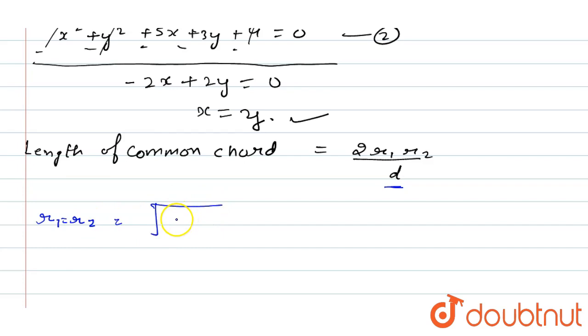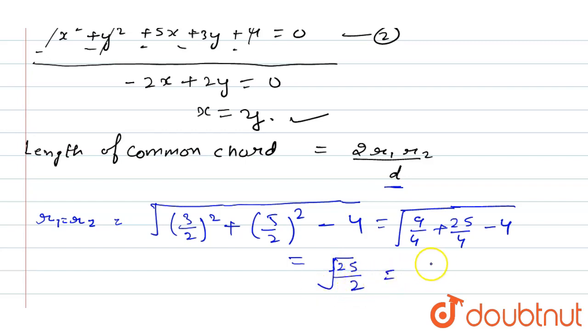Using the formula with center points: r equals square root of 3 upon 2 the square plus 5 upon 2 the square minus 4, which equals 9 by 4 plus 25 by 4 minus 4. Solving gives under root 25 upon 2, which equals 5 upon root 2.